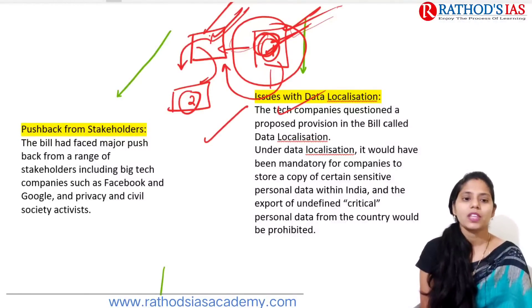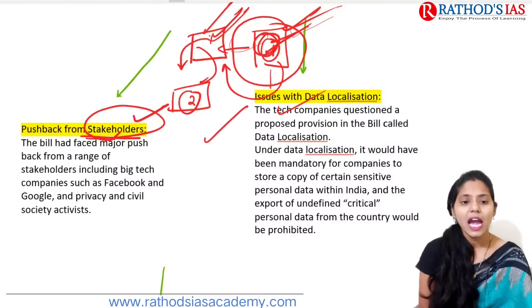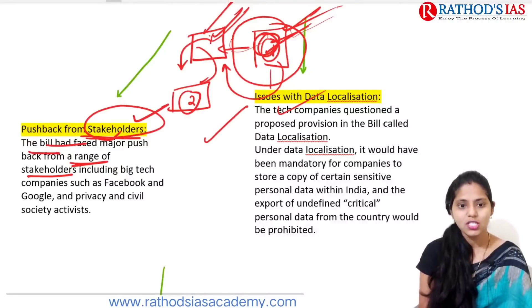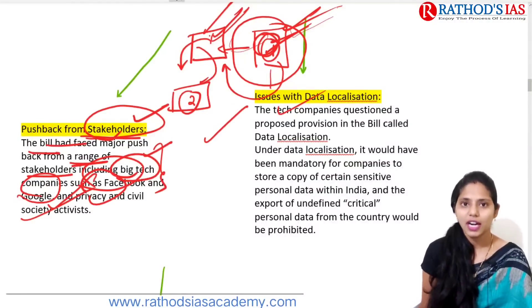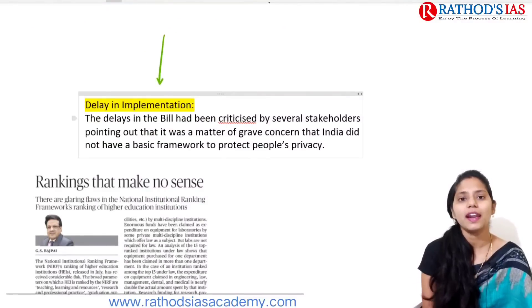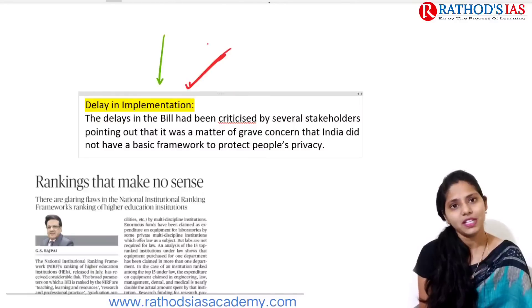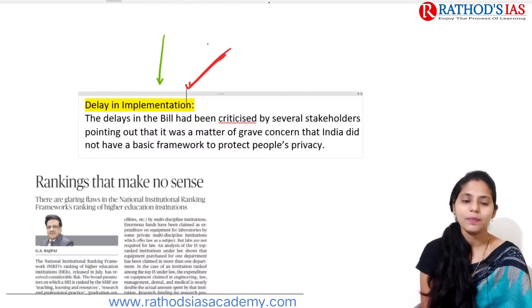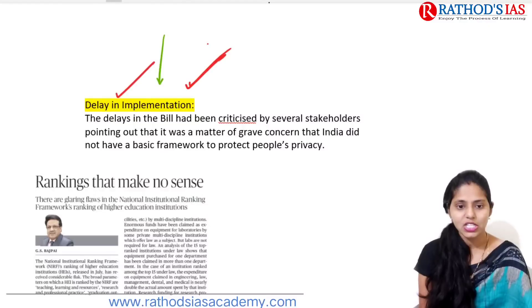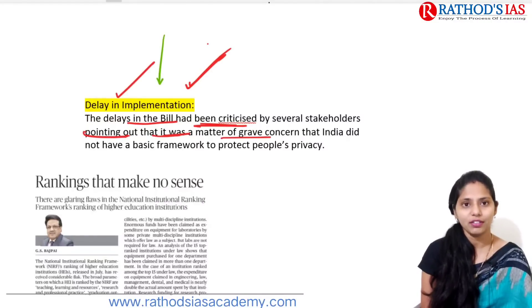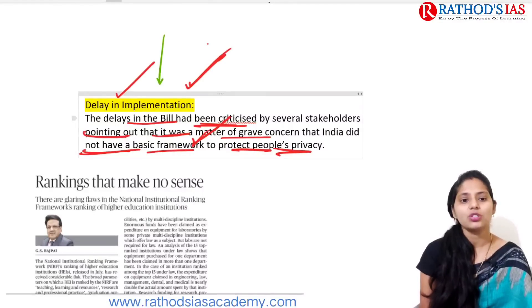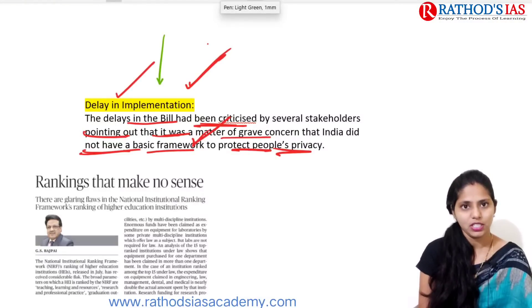The bill also faced major pushback from stakeholders including big tech companies like Facebook and Google, and civil society activists regarding privacy. As we know, the right to privacy is a fundamental right declared by the Supreme Court in the Puttaswamy judgment of 2017. There was also criticism over delays in implementation, with stakeholders pointing out that it was a grave concern that India did not have a basic framework to protect people's privacy.